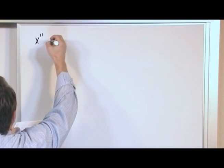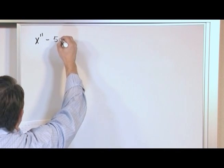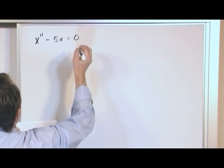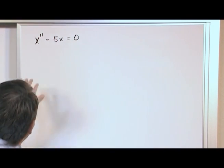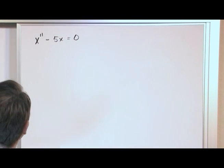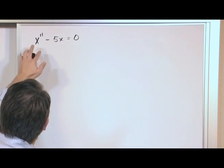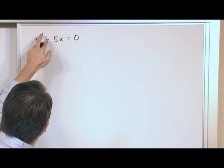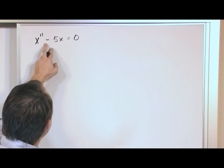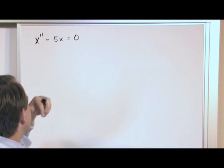x'' - 5x = 0. What we're trying to find is x(t), where x is a function of time. When we say x'', we're really saying d²x/dt², the second derivative of x with respect to time, minus 5x equals zero.